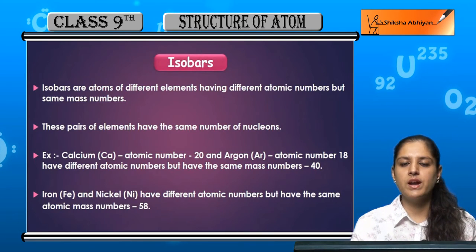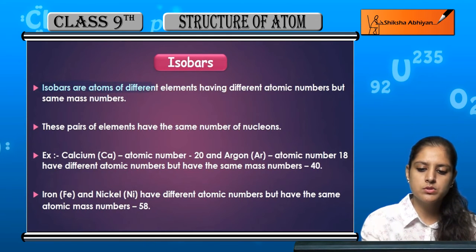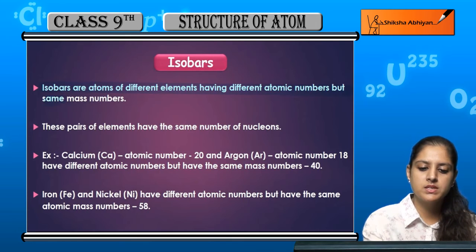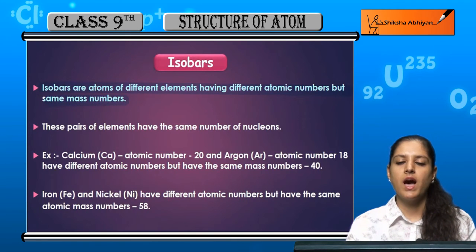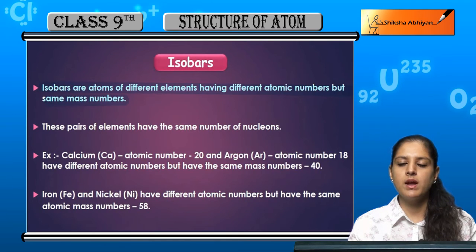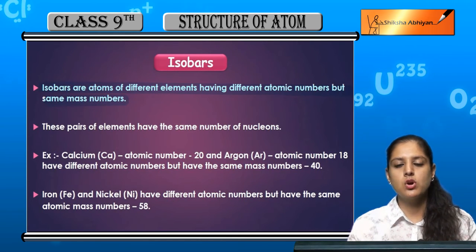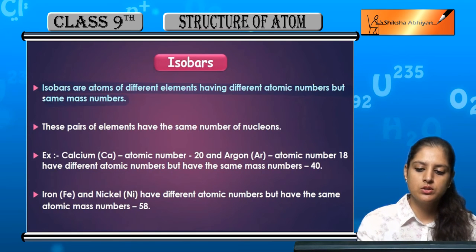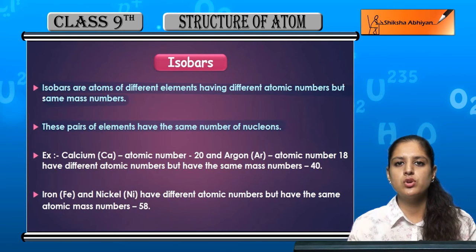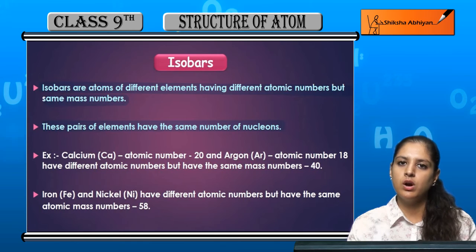Now let us have a look at what isobars are. Isobars are atoms of different elements having different atomic numbers but the same mass numbers. So these pairs have the same number of nucleons — the number of nucleons is the same, but the number of protons is different.